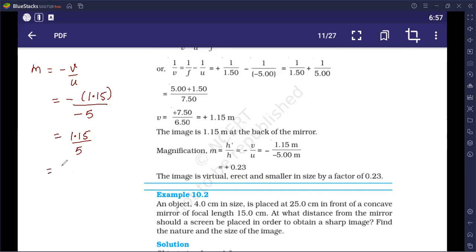This will be 115 upon 100 into 1 upon 5. We will solve like small children. We take one step at a time. Tell me, what is the simplification of this? If you divide 115 by 5, what comes? So, 115 divided by 5 is 23. 23 upon hundred is 0.23. Now see here, you got a positive sign. We had already discussed that if positive sign comes, what is the image? Virtual.